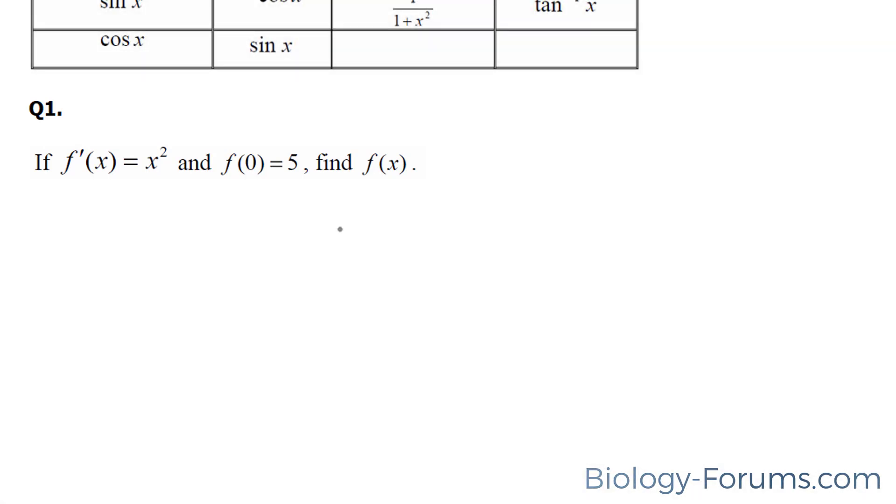The first thing we'll do to tackle this question is to find the antiderivative of f prime. We learned in previous videos that to find the antiderivative, you will increase this number 2 by 1, and then you take that number and make it the denominator, plus c.